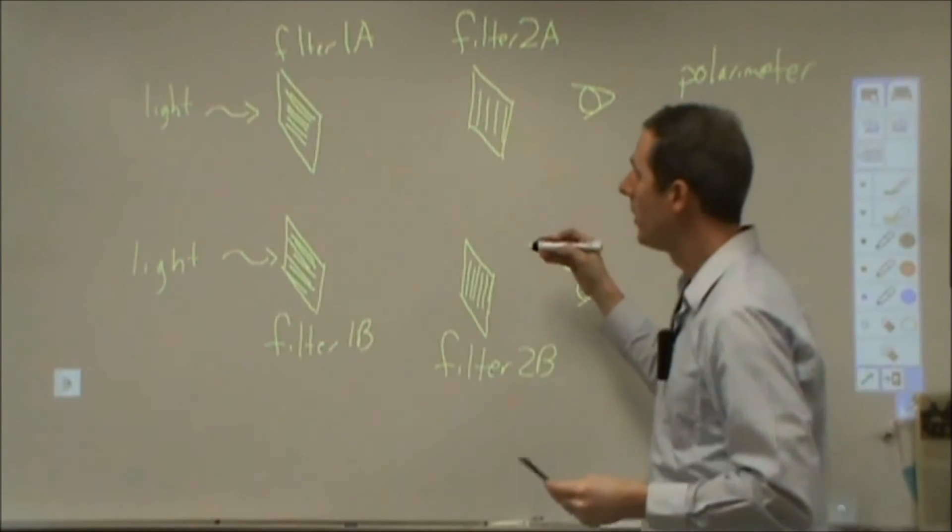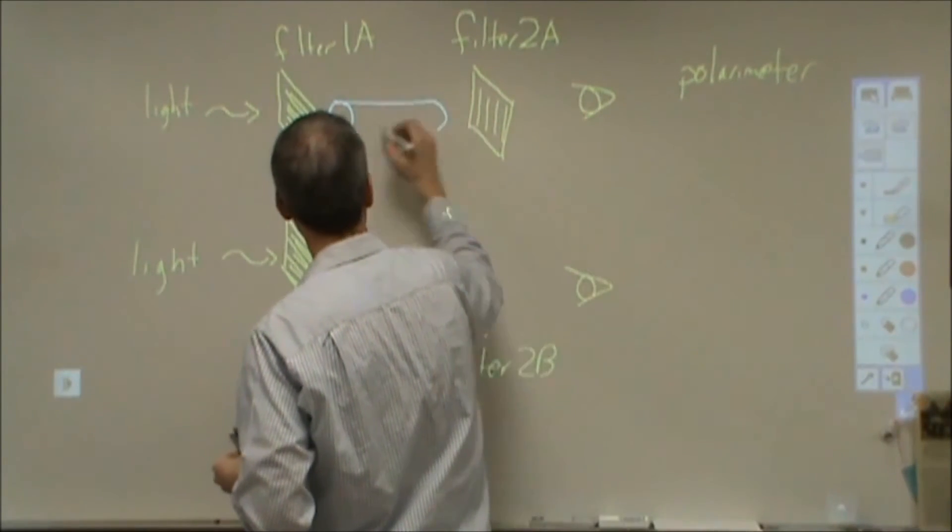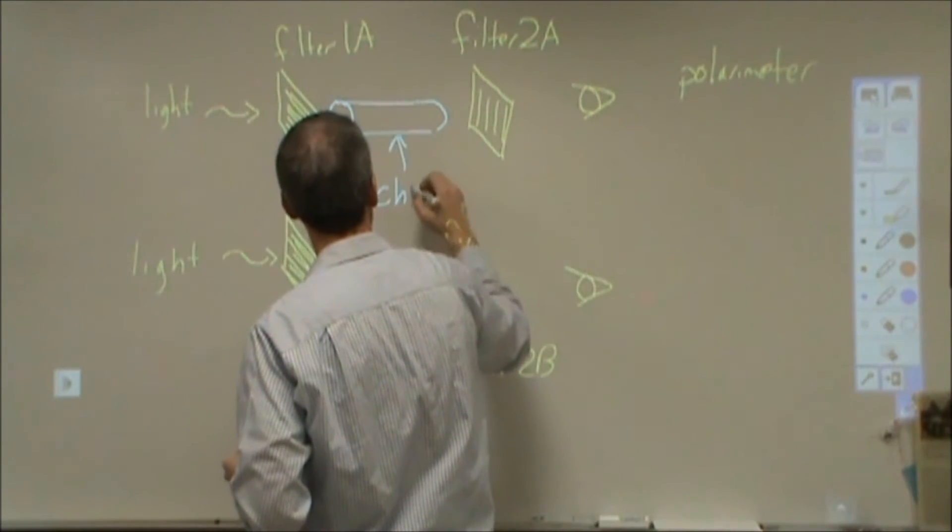Now, in a polarimeter, what you do is in between these two, you have some kind of cylinder that you fill with a chiral sample.